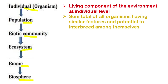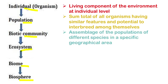A biotic community means an assemblage of populations of different species in a specific geographical area. For example, in a forest area you have populations of mango plants, papaya plants, grass plants, pine trees, and natum plants — different populations interacting in a particular geographical area constitute a biotic community.